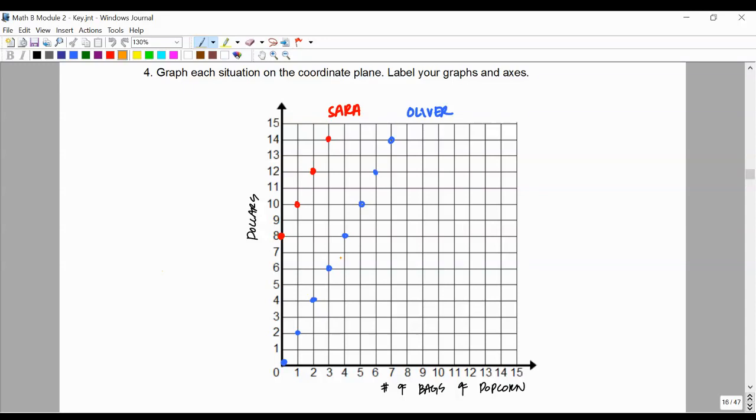We see Oliver, and Oliver's graph is proportional. It's linear and passed through the origin.